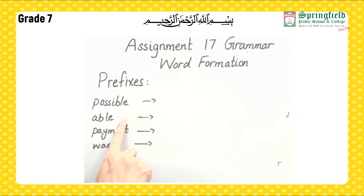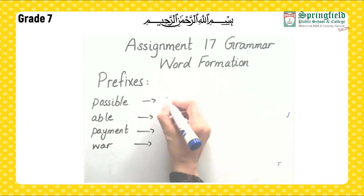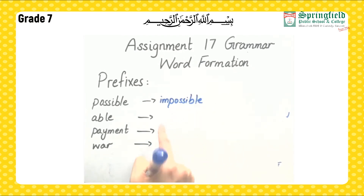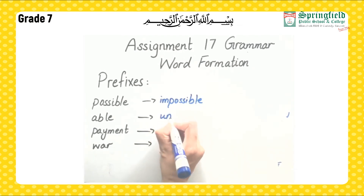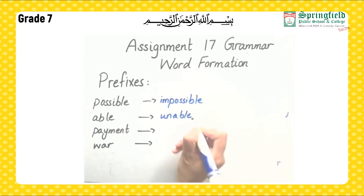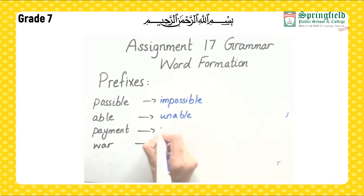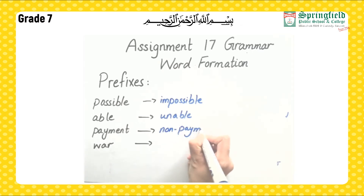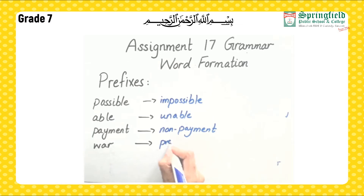Here are some examples of prefixes with base words: possible, able, payment, war. By adding prefixes, possible becomes impossible, able becomes unable, payment becomes non-payment, and war becomes pre-war.